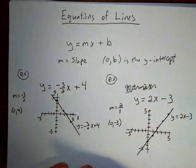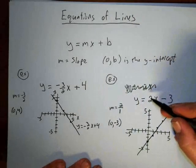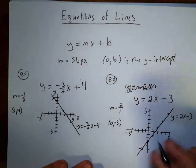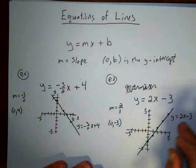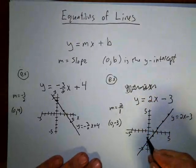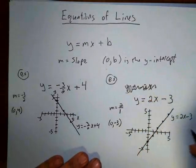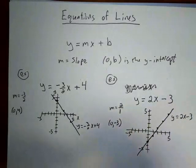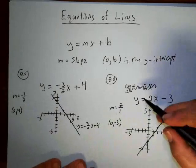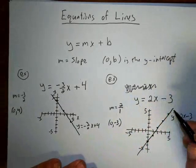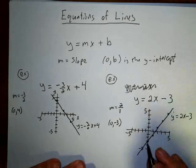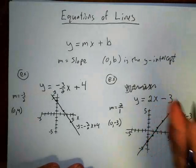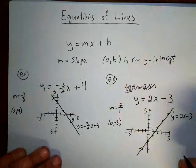If the slope were 1/2, you'd go up 1 for every 2 you go over, making the line less steep. If it were 1/10, you'd go up 1 for every 10 you go over, making it even more gradual. So a line is determined by the slope — the number on the x — and the y-intercept, which tells you where it crosses the axis. The slope tells you how it's tilted.